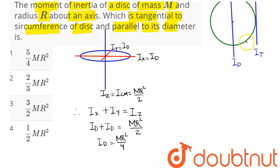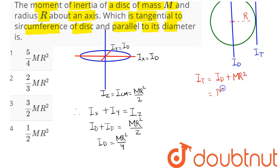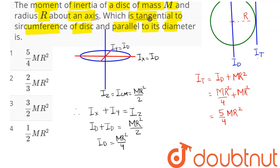Now, the moment of inertia about the tangential axis is found using the parallel axis theorem: I = I_cm + m·d², where I_cm here is I_d = MR²/4, and d is the distance between the two axes, which equals the radius r. So I = MR²/4 + MR² = 5/4 MR². The moment of inertia about an axis tangential to the circumference of the disc and parallel to its diameter is 5/4 MR², which is option number 1.